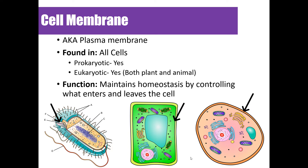Let's start with the cell membrane, sometimes called the plasma membrane — both terms refer to the same structure. The cell membrane surrounds all cells, so it's found in both prokaryotic and eukaryotic cells, and for eukaryotic cells, both plant and animal cells. Its function is to help the cell maintain homeostasis by controlling what enters and leaves the cell. It's made of two layers called the phospholipid bilayer, which we'll cover in more detail in a future lesson.